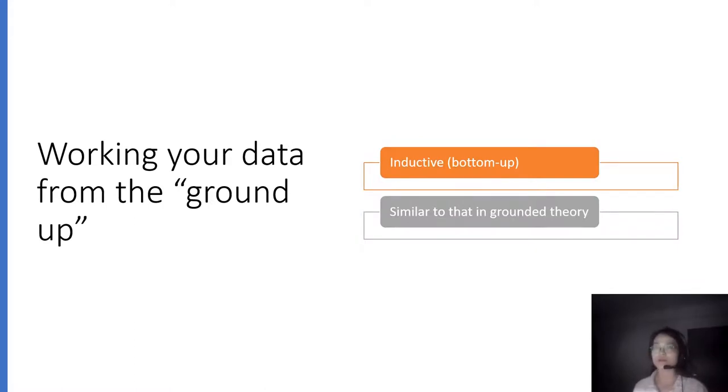The second one is quite opposite from the first strategy. It is inductive. We also call it bottom up. So this approach is very similar to the grounded theory. So you actually dive into the data. And you form themes, sub-themes. You, in fact, formulate a whole set of theoretical conclusions from the empirical data and form a theory as a result.